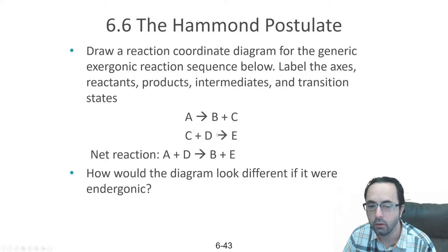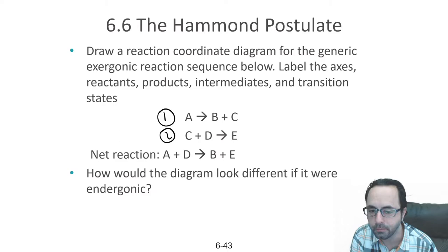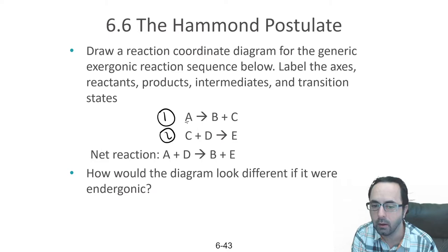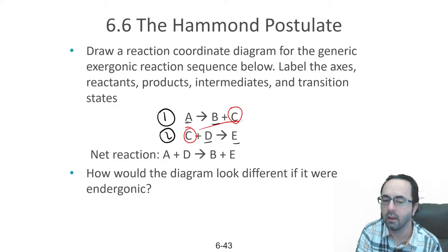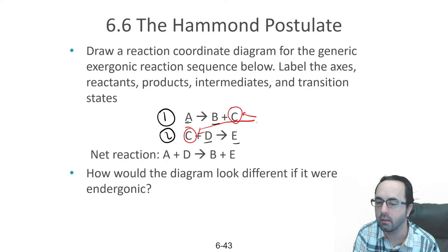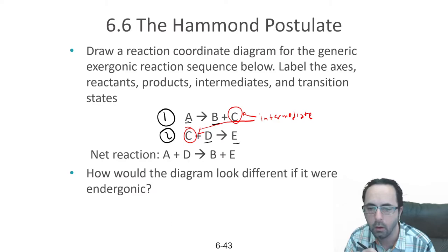Let's say we have a general reaction going in two steps. We have reactants A and D, and products B and E, with C as an intermediate. We can tell C is an intermediate because it's neither a reactant nor a product — it is produced and then consumed. This is an exergonic reaction, so A and D will be higher in energy than the products B and E. Since there are two steps, we'll have two bumps in our reaction energy diagram.